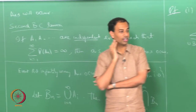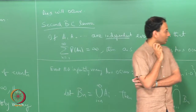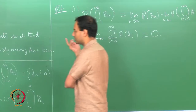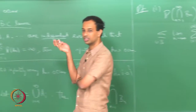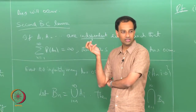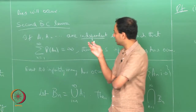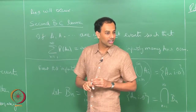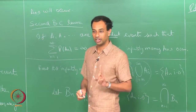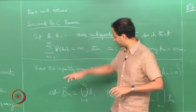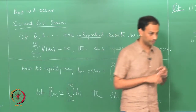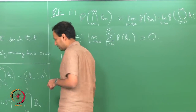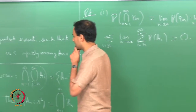Now we have to prove the second Borel-Cantelli lemma. It is a partial converse — I am saying partial converse because you need independence. It does not say that no matter what, if the summation is infinite I will always have infinitely many A_n's; you need independence, it is further stipulating independence. The second Borel-Cantelli lemma requires some algebraic jugglery.